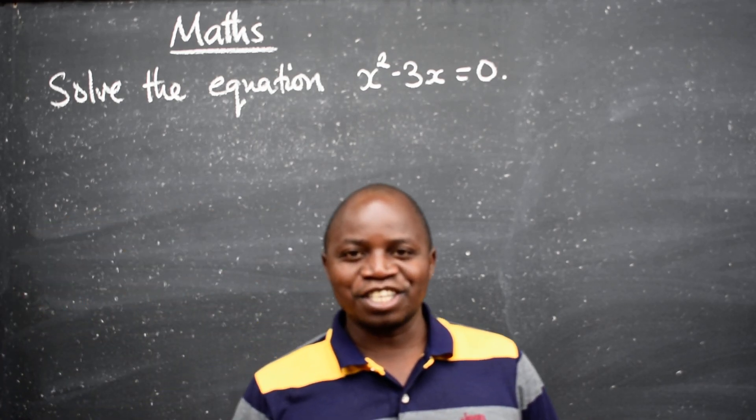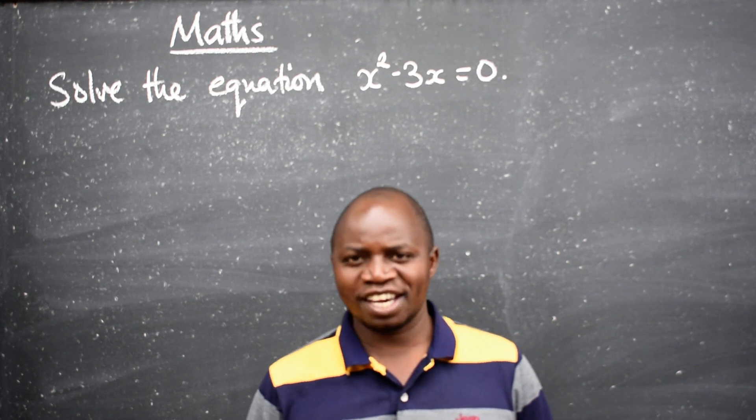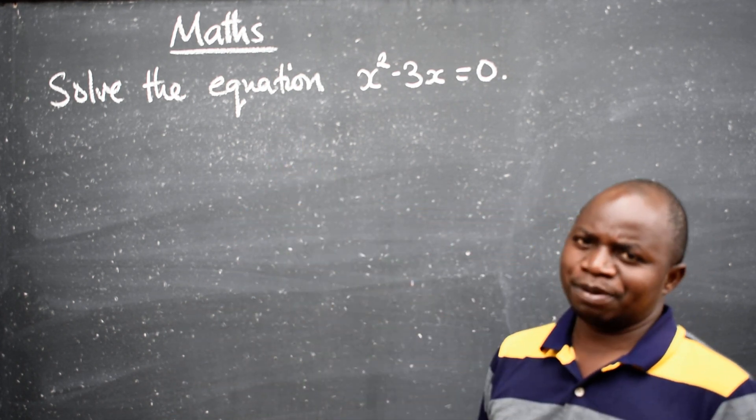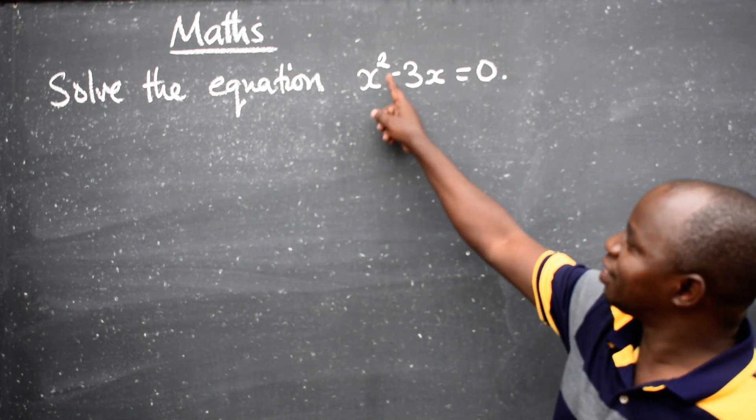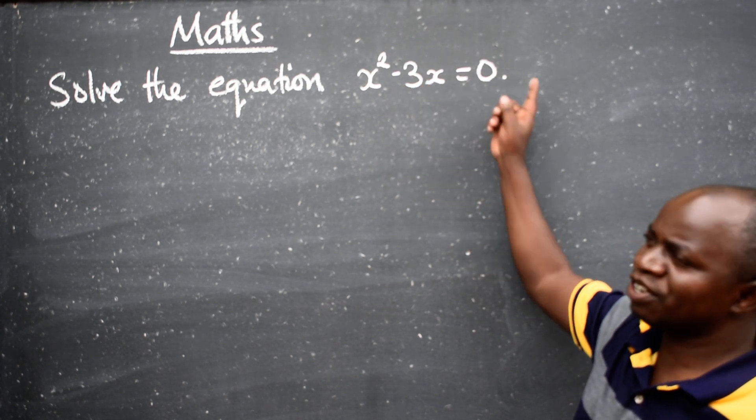Hello ladies and gentlemen, this is Mathematics. Let's look at this question. Solve the equation x squared minus 3x is equal to zero.